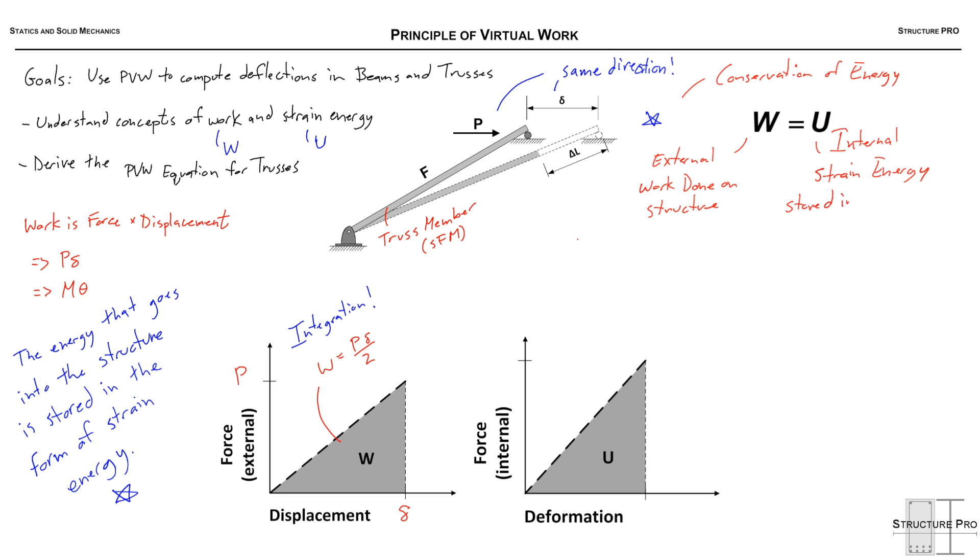And just how we plotted the work being done, we can also plot the deformation being stored. So the internal force in this truss member is F and the deformation is big delta L. So we can say similar to the W equation that U is F times delta L over 2, from the time that we aren't doing any work to the time that we're pushing with the load P and we have created this displacement small delta and this deformation big delta L.